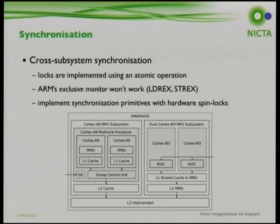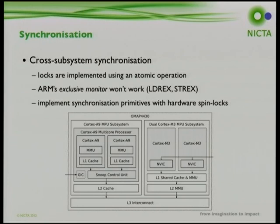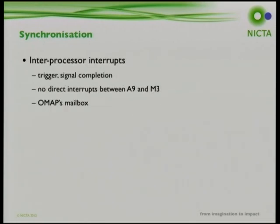Synchronization between cores is needed as in any SMP system, but it's more difficult because the Cortex M3s and A9s are in separate subsystems. ARM generally uses exclusive monitors for atomic operations, which work between the two A9 cores via the snoop control unit, but won't work between M3s and A9s. TI provided a hardware spin lock module implementing hardware-supported spin locks, so we changed all synchronization primitives in Linux to use these instead of the traditional exclusive monitors.